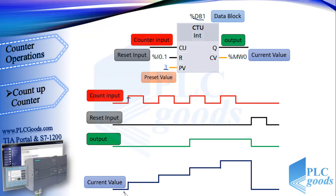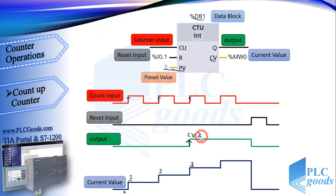Let's see how outputs change with this diagram. When we have a positive signal edge at the counter input, the count value CV will increment by 1. With another positive signal edge, the counter value changes from 1 to 2. Finally, with the next pulse, the counter value reaches 3, which is equal to its preset value. At this moment the output changes from 0 to 1. For this counter, when the counter value is equal to or greater than the preset value, the output will be on.